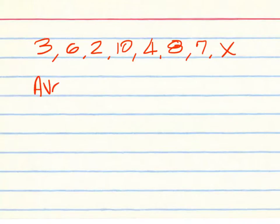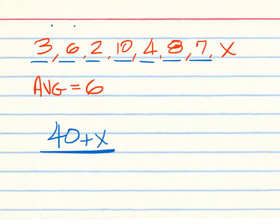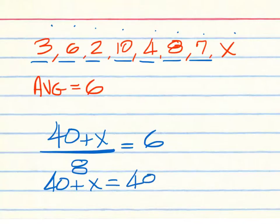All right, in this practice problem, we have a 3, 6, 2, 10, 4, 8, 7, and X. The average we are trying to get is 6. Find X. For the practice problem, we have 3, 9, 11, 21, 25, 33, 40. And we're going to add to that X. We have 1, 2, 3, 4, 5, 6, 7, 8 numbers. And the average we're trying to get is 6. So, 40 plus X equals 48. Clearly, the answer would have to be 8 in that case.